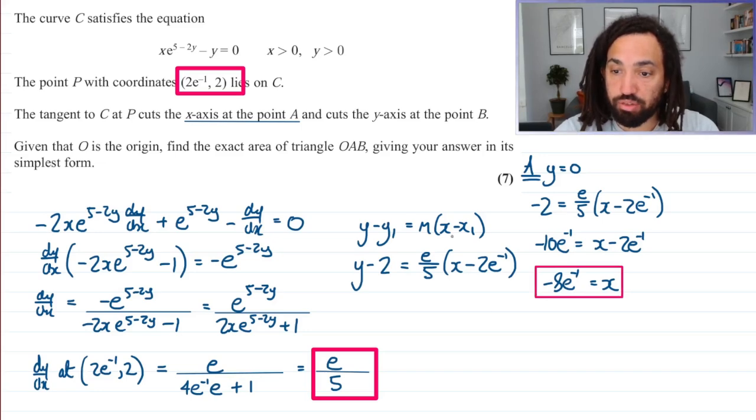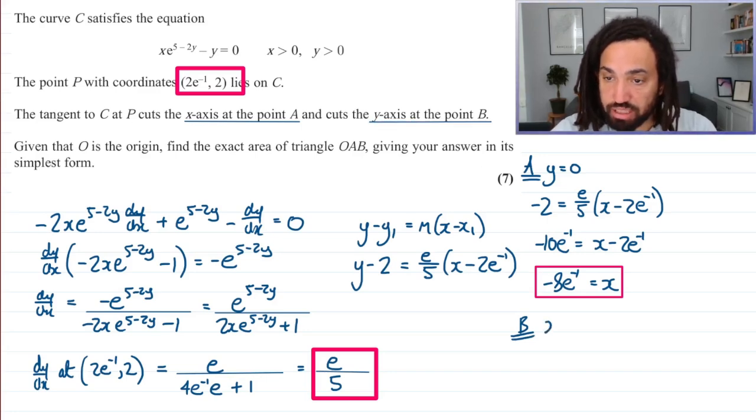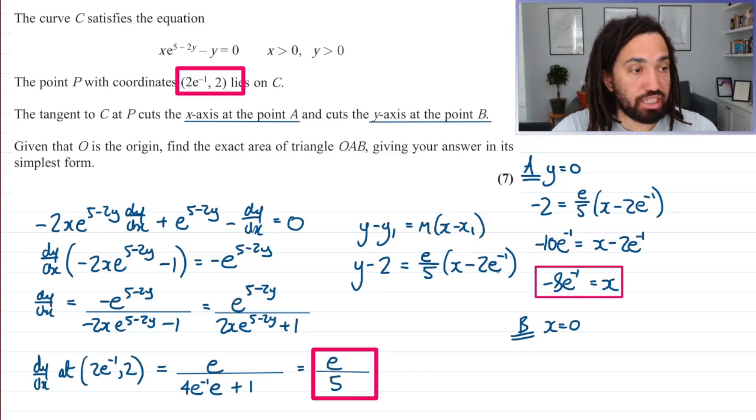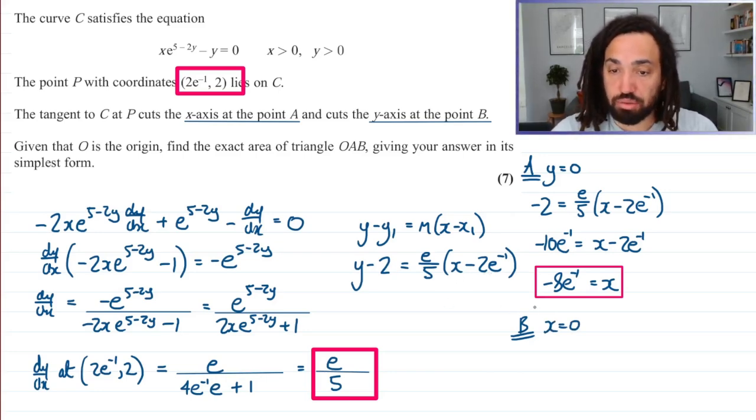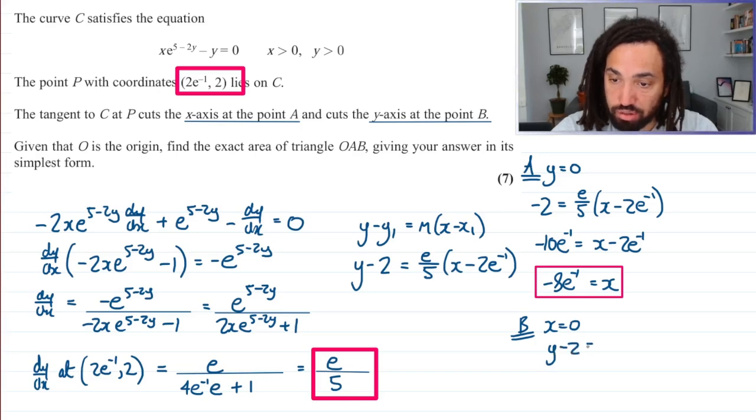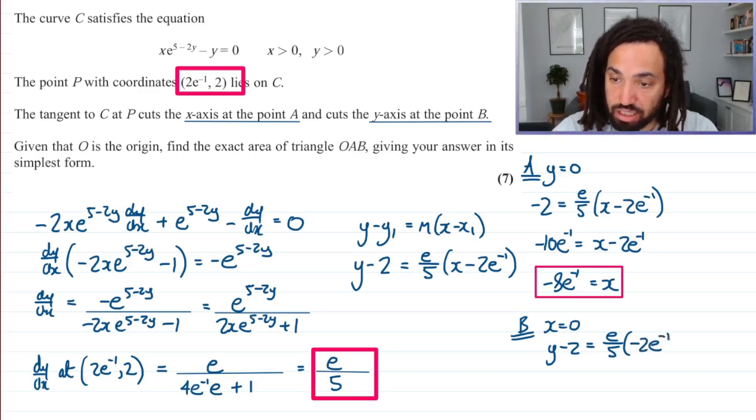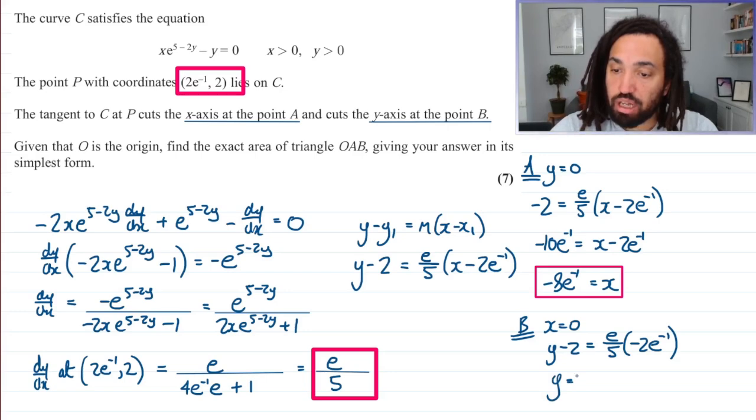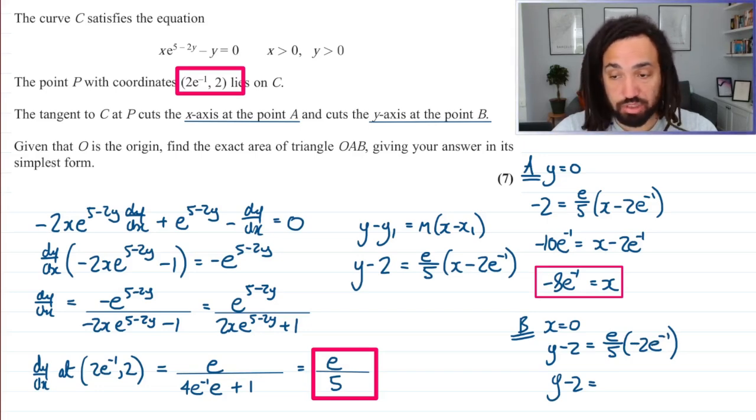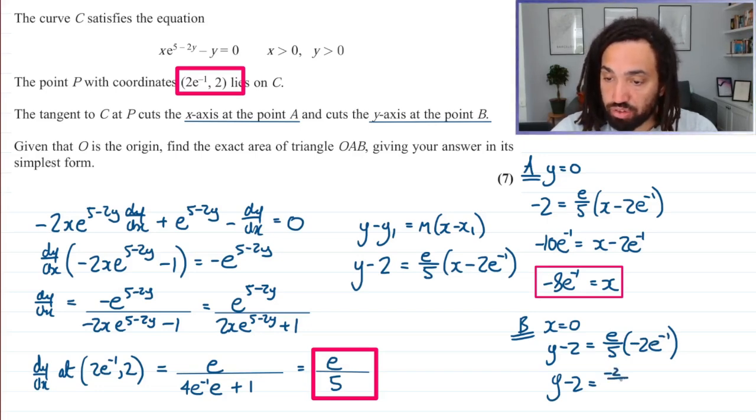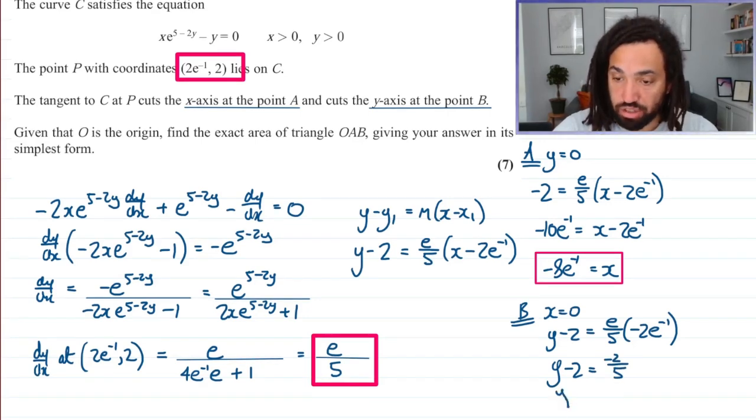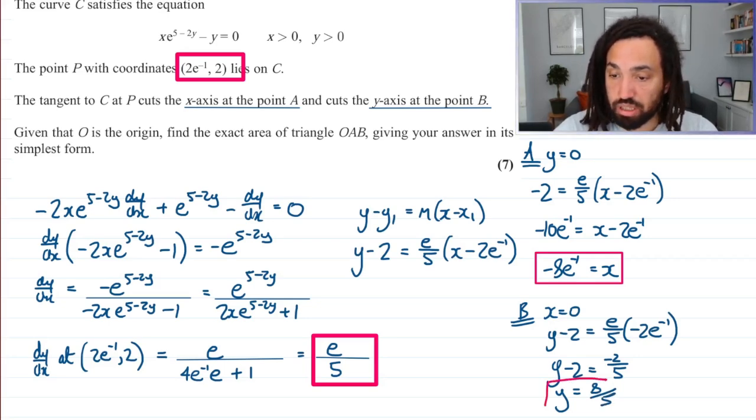Right now we'll go on and we'll find the coordinate B. So at B we know that it cuts the Y axis which means that X equals 0. So substituting into the tangent again X is equal to 0 that's going to give us Y minus 2 is equal to E over 5. X is 0 so we're just left with minus 2E to the minus 1 in that bracket. And then multiplying through the E will cancel with the E to the minus 1 to make 1 and we'll just have minus 2 over 5. Okay so add 2 to that and that will be 8 over 5. So that is the Y coordinate there at B.